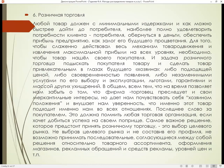Розничная торговля. Любой товар должен с минимальными издержками и как можно быстрее дойти до конечного потребителя, наиболее полно удовлетворить потребности клиента, обернуться в деньги, обеспечить прибыль предприятию как залог его будущего стабильного процветания. Для того чтобы слаженно действовал весь механизм товаропродвижения и извлечения максимальной прибыли, на всех уровнях необходимо, чтобы товар нашёл своего покупателя. Задача розничного торговца – подыскать покупателя товару и сделать товар привлекательным в глазах будущего хозяина.